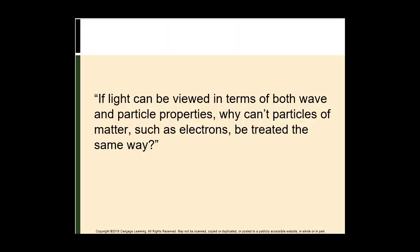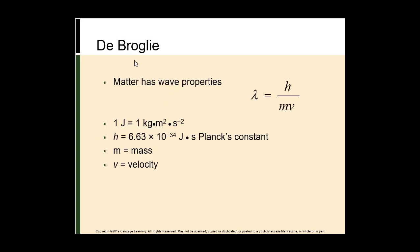If light can be viewed in terms of both wave and particle properties, why can't particles of matter, like electrons, be treated the same way? De Broglie tells us that matter has wave properties. We're able to measure the wavelength as equal to Planck's constant divided by momentum, or mass times velocity.